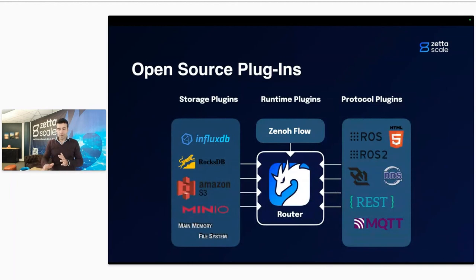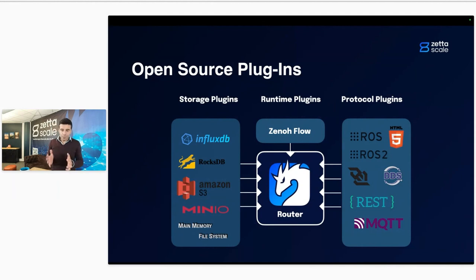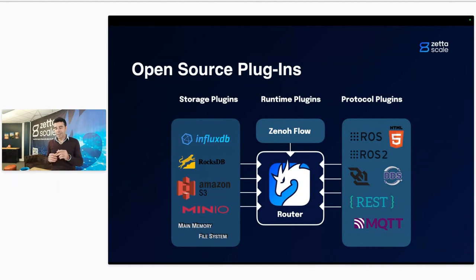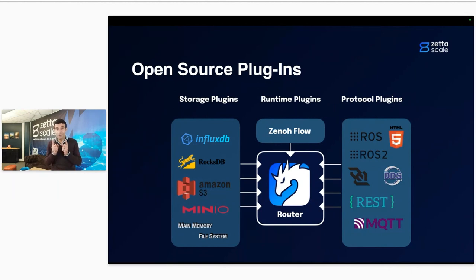We have lots of plugins in the open source. We have plugins to databases used to store data that is eventually queried through queryables — as of today: InfluxDB, RocksDB, Amazon S3, MinIO, Main Memory, and File System. We have plugins for protocols: ROS, ROS2, HTML5, DDS, REST, MQTT, WebSocket. We also have a plugin for Zenoh Flow. We will be providing more information on Zenoh Flow during the Zenoh user meeting on December 12th at 3 p.m. Paris time — it's completely free, so just join in and enjoy it.